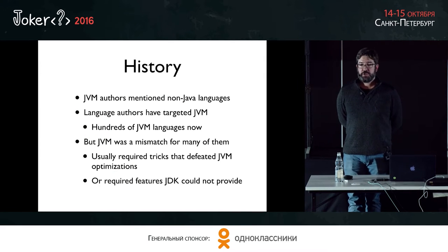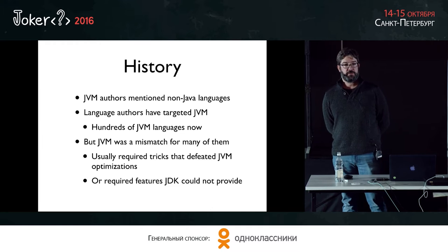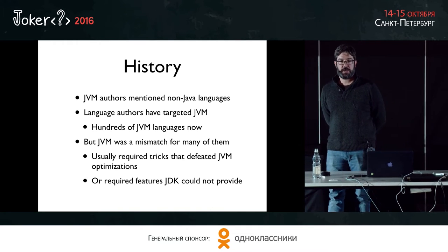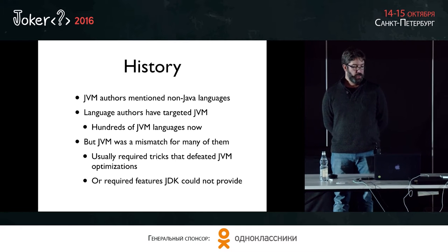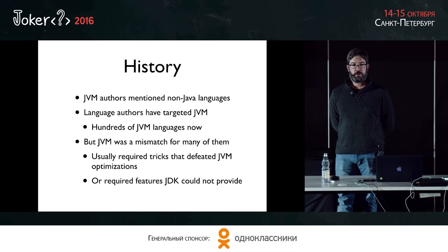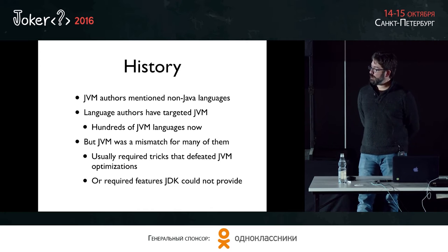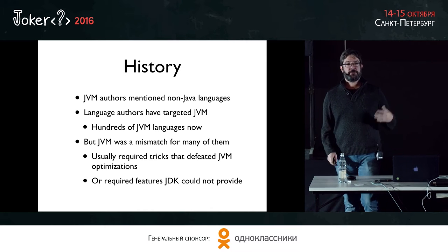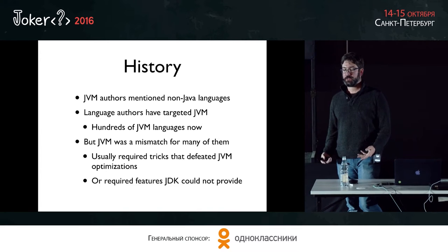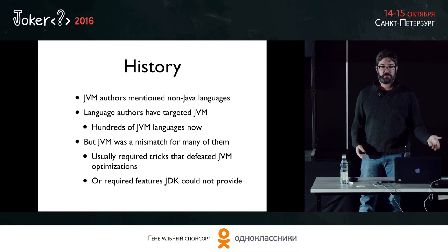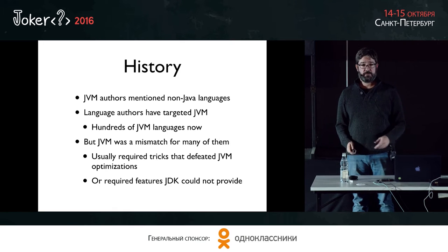A little history. The JVM authors originally did talk about other languages someday running on top of the JVM. Even in the very first JVM specification, they saw a future where we might have more than just one language running on this platform. Over the years, hundreds of developers and hundreds of languages have been written on top of the JVM. But the problem is that a lot of those languages were different enough from Java that they didn't really fit. The JVM was kind of designed around Java, and these languages often had to do lots of ugly tricks to run well and perform well. Sometimes it was simply impossible to make them fast and efficient.